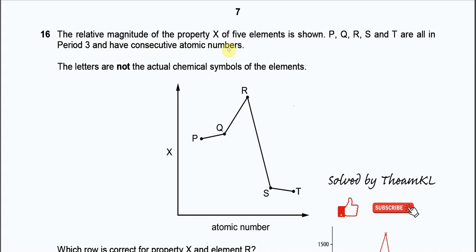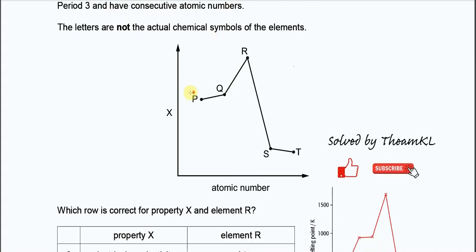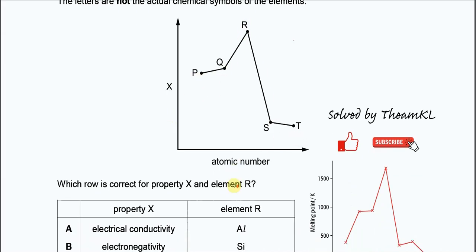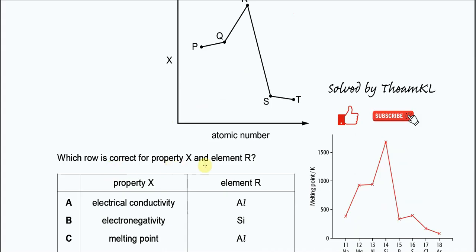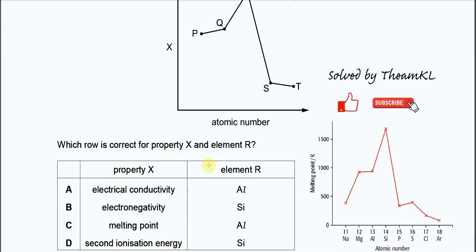Means they are next to each other. So this is the property X with P, Q, R, S, T. The question is which row is correct for property X and element R.